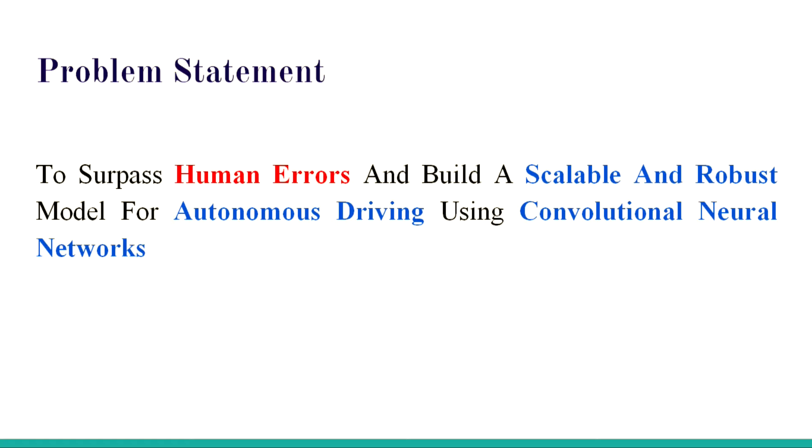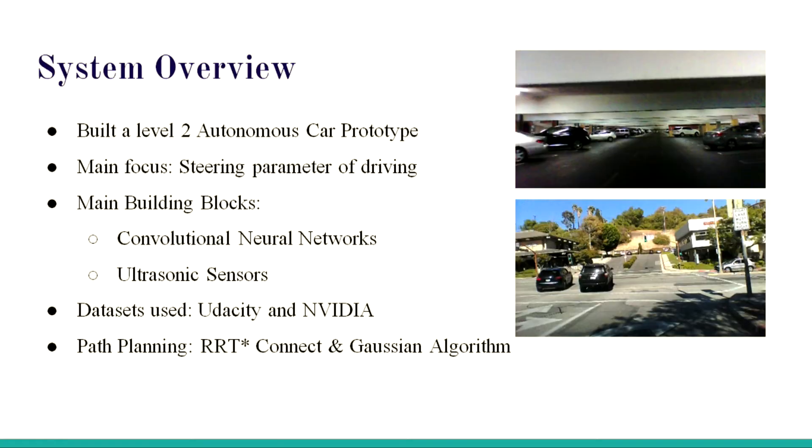Our project basically focuses on autonomous driving. It is a level two car. There are five levels in autonomous driving, each level depending on the level of human intervention. Level two is some part of human intervention and more part of autonomy. The major focus is on the steering parameter. There are two parameters in driving: steering and speed acceleration. This project focuses on the steering parameter. Further work can be done on the velocity level.